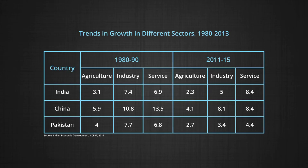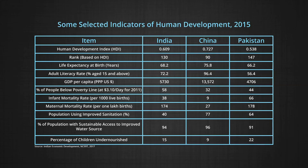Table six gives selected indicators of human development for the year 2015. China with an HDI of 0.73 is in a much better position as compared to India at 0.61 and Pakistan at 0.54. The higher HDI ranking of China at 90 could be due to their policies to limit population growth, in addition to the export-driven manufacturing sector that adds to its per capita GDP.